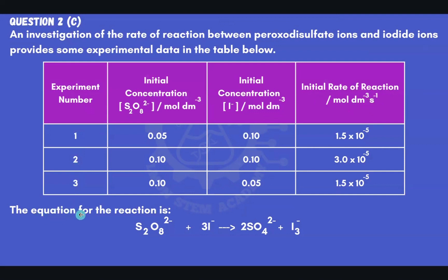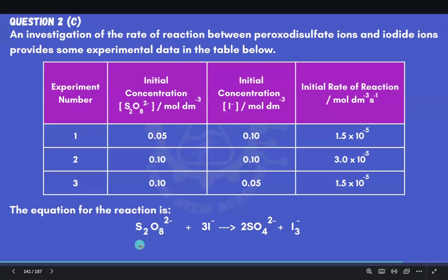The equation for the reaction between the peroxodisulfate ions and the iodide ions shows one mole of peroxodisulfate ions reacting with three moles of iodide ions to form two moles of sulfate ions and the I₃⁻ iodide ion.